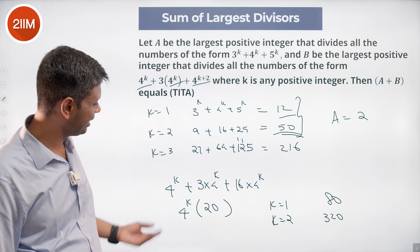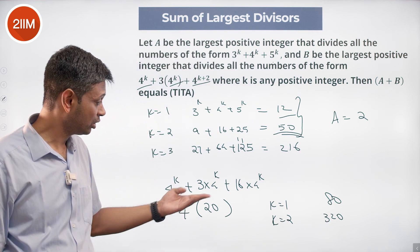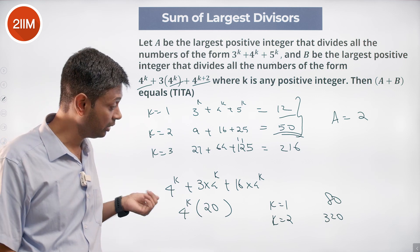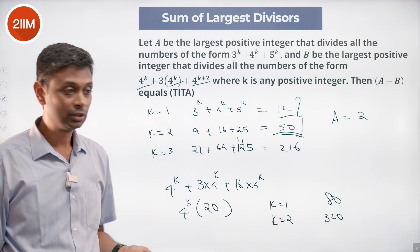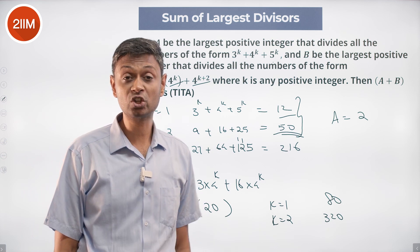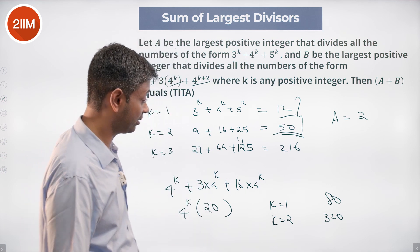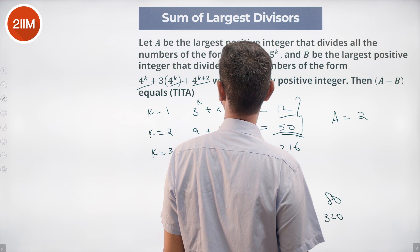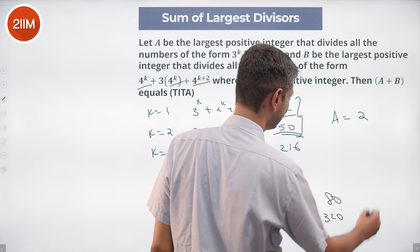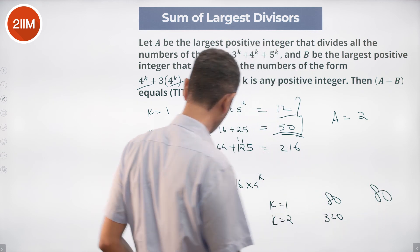So this, the number, any number, k is 3, it will be 320 into 4, k is 4, it will be 320 into 4 into 4. So always is a multiple of 80, the largest positive integer that divides this. For any k is 80.